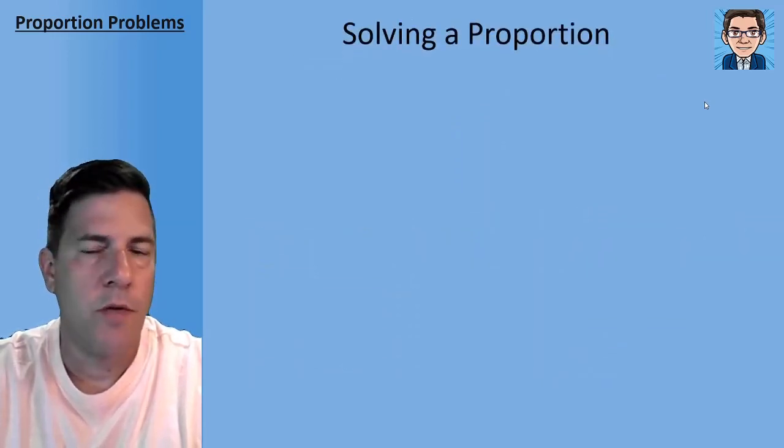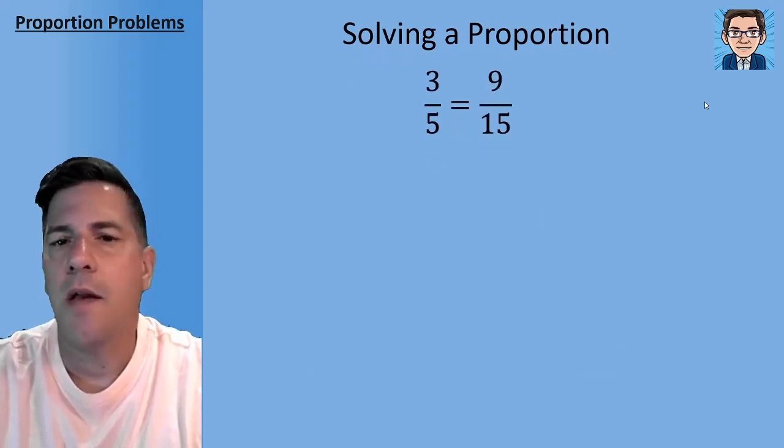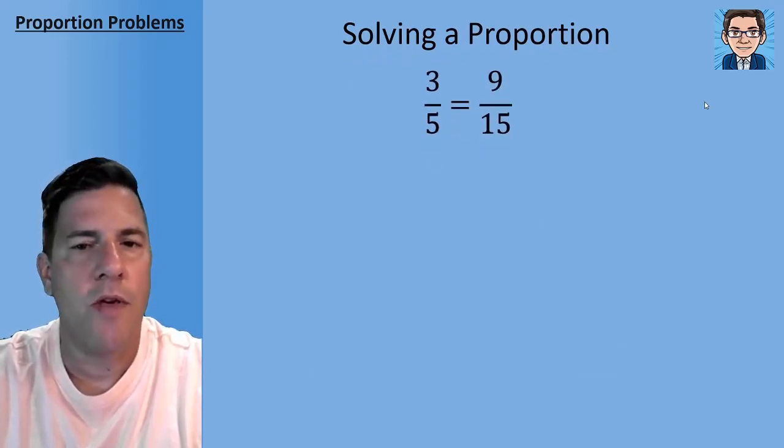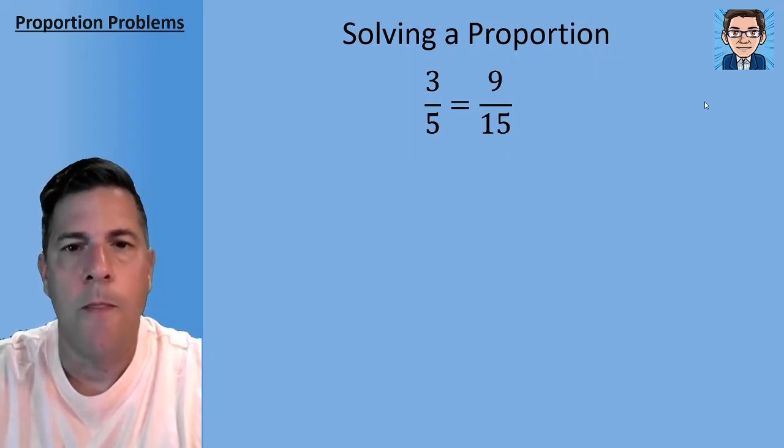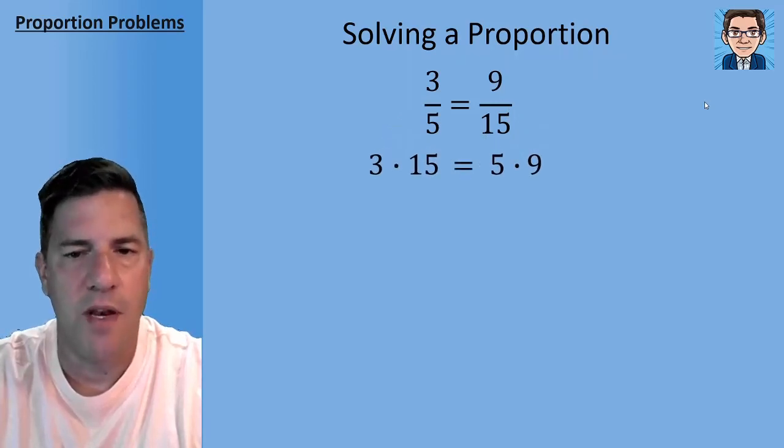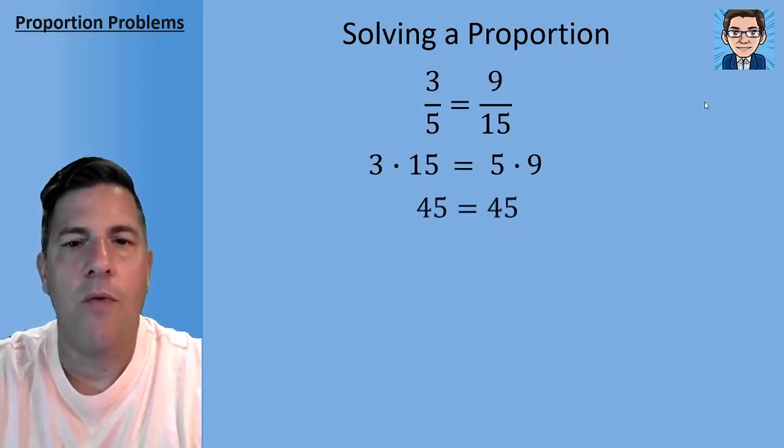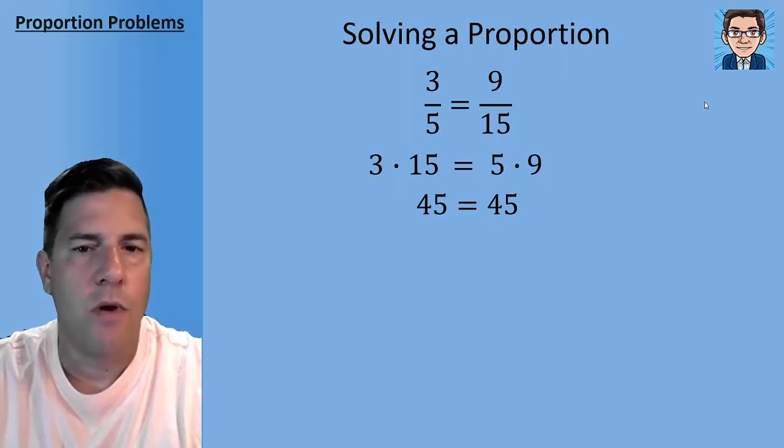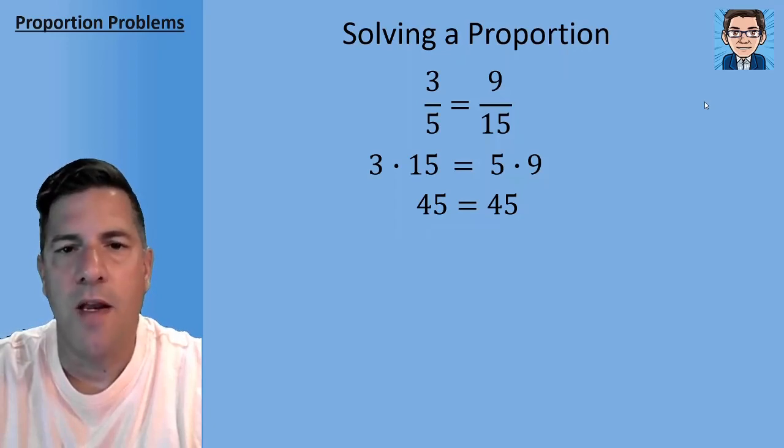So now solving a proportion, we can notice that back in that proportion, 3/5 equals 9/15, the two diagonals are going to multiply to the same thing when you've got a proportion. So the 3 times 15 and the 5 times 9 are both going to equal 45. We're essentially putting it over a common denominator and that's why this works. The 3 times 15 and the 9 times 5, the two diagonals are always going to be equal when two fractions are set equal to each other.